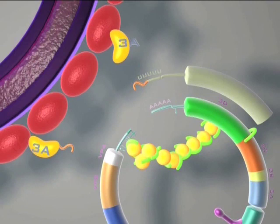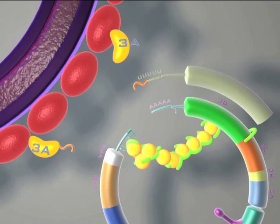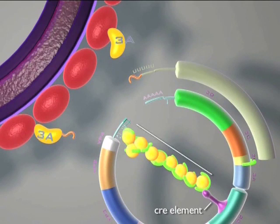Then, another ribonuclear protein complex containing more 3CD Pro is formed at the CRE RNA hairpin, interacting with the 5' end.